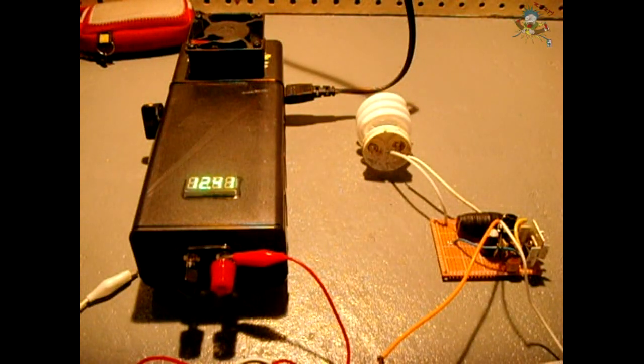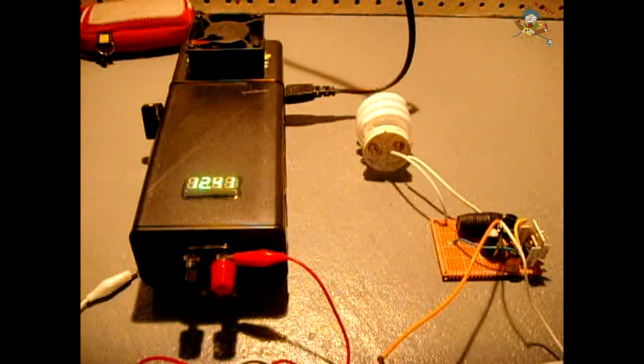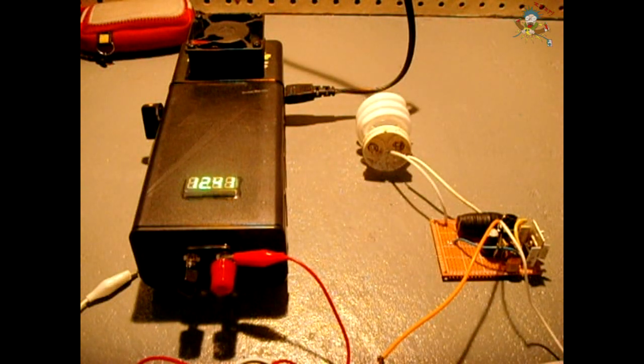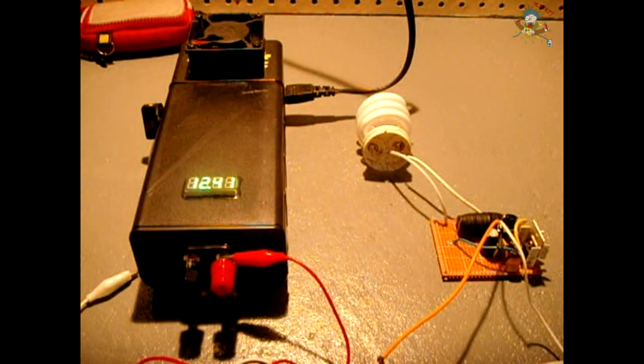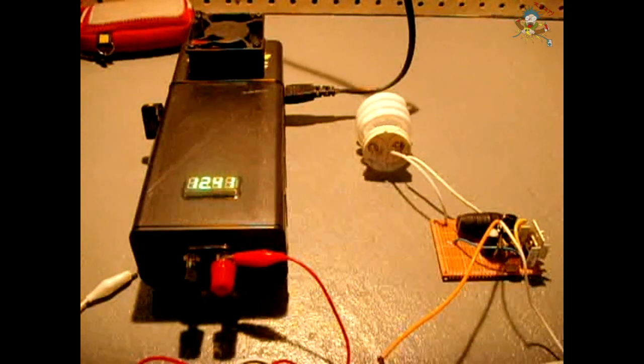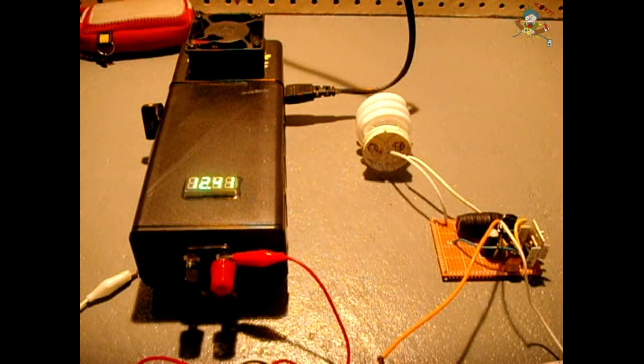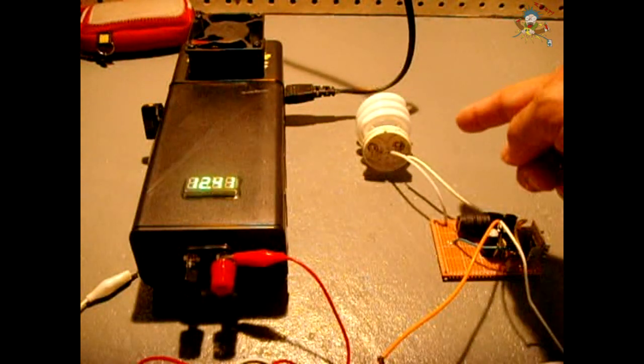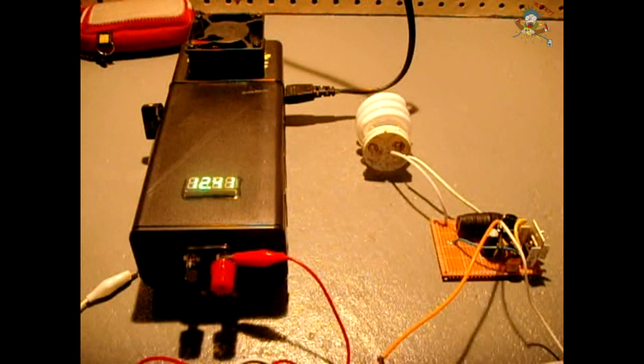In today's video I will show you a really nice and simple fluorescent tube drive circuit. The circuit uses 12 volts DC to light up a 20 watt fluorescent tube. In my case I'm using a 13 watt compact fluorescent light like you see here.